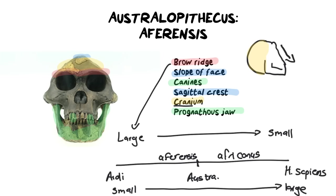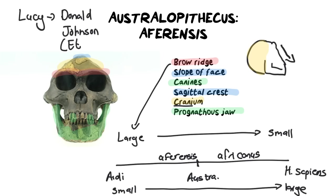The famous fossil we need to know for Australopithecus afarensis is Lucy. Lucy was discovered by Donald Johanson, and he found Lucy also in Ethiopia. Again, that is important for the Out of Africa hypothesis and the origins of human life.